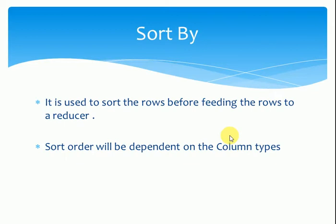The outcome of SORT BY is n or more sorted files with overlapping ranges. SORT BY is mainly used for large data files with many reducers, and the number of output files corresponds to the number of reducers used.